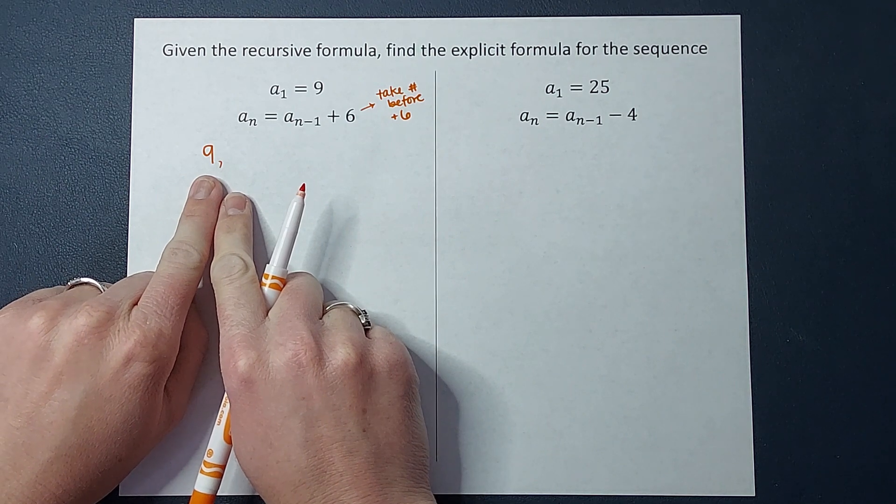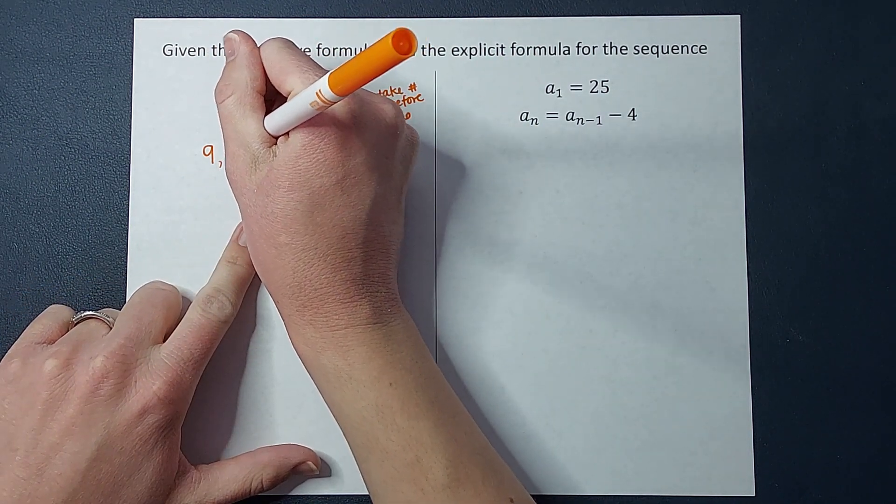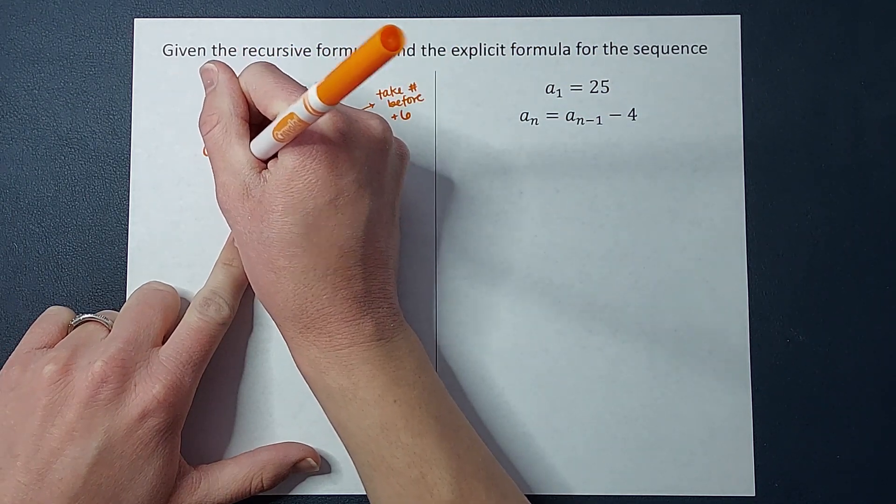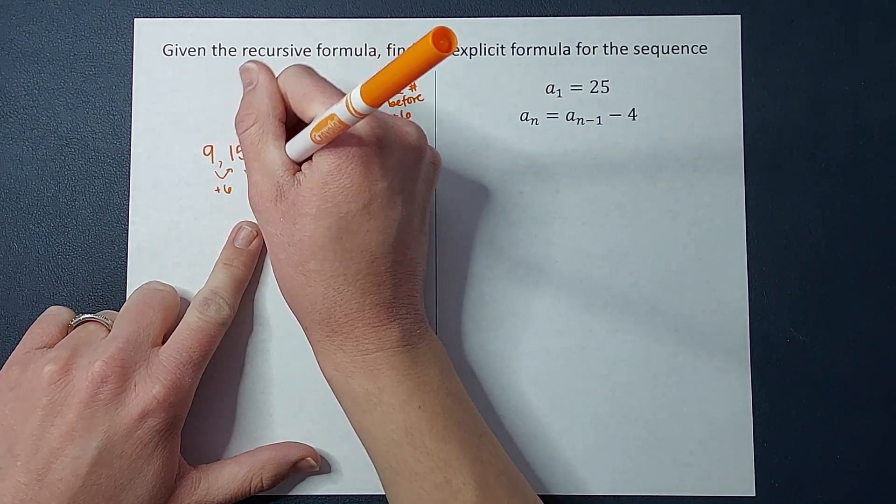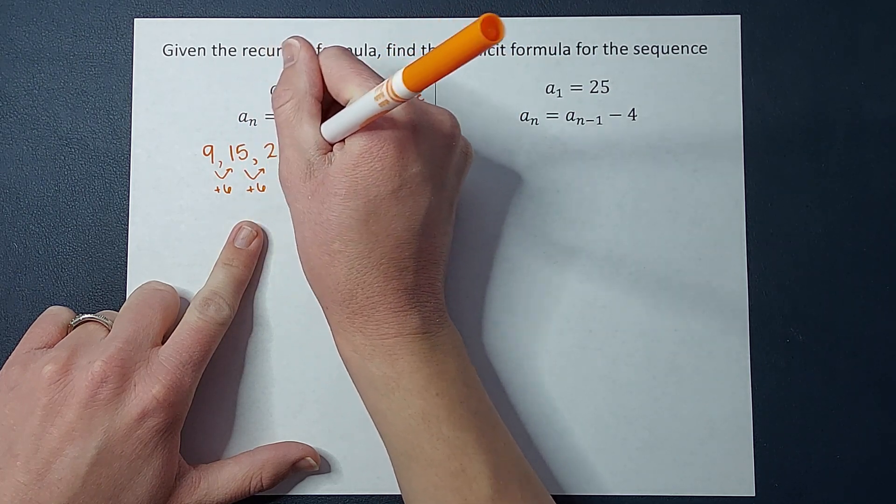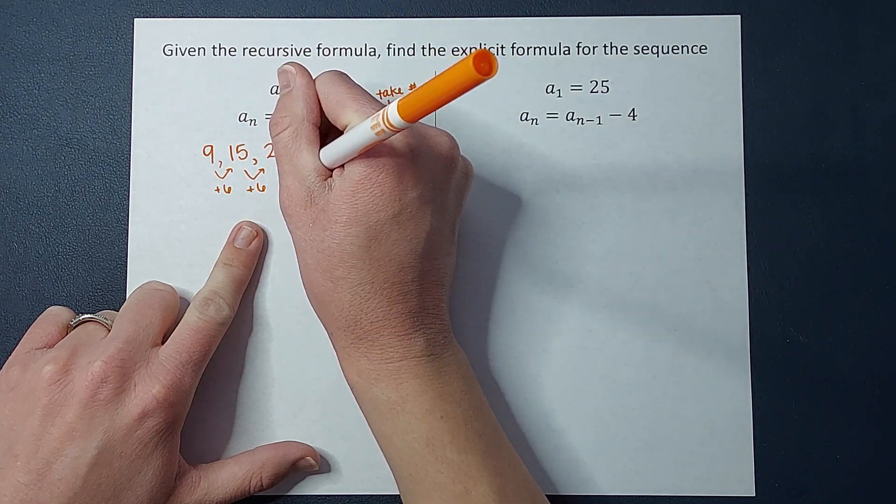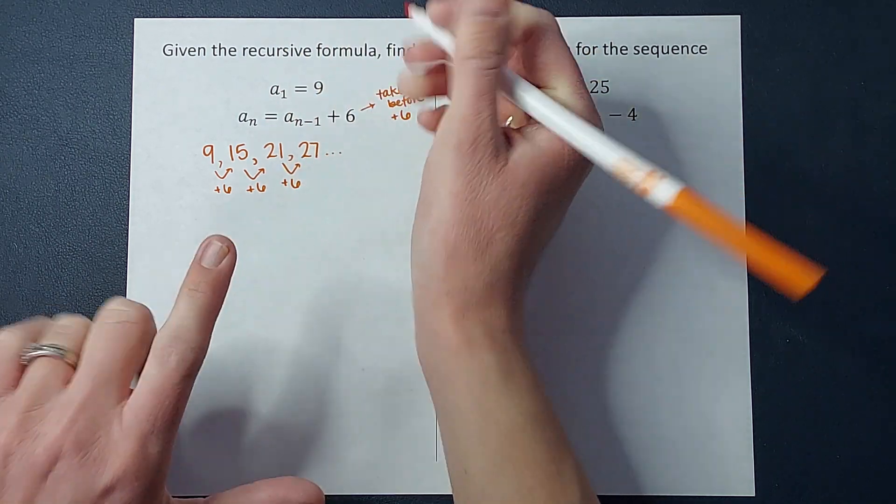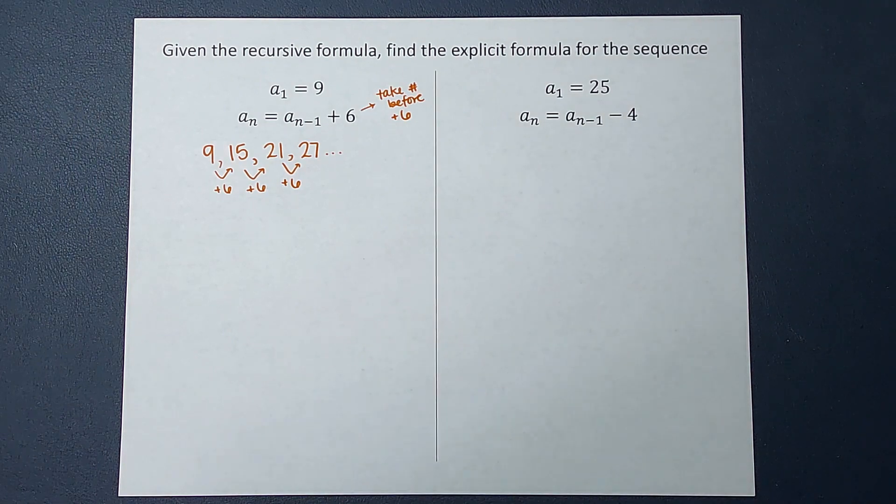So to find the next term I'm going to add six which would give me 15. I'm going to add six again. Sorry I want to write that down, it's going to help us in a minute. Add six again, I'm going to get 21. And then add six again, and I'm going to get 27. And I'm going to write a dot dot dot meaning it doesn't stop there. It keeps going.